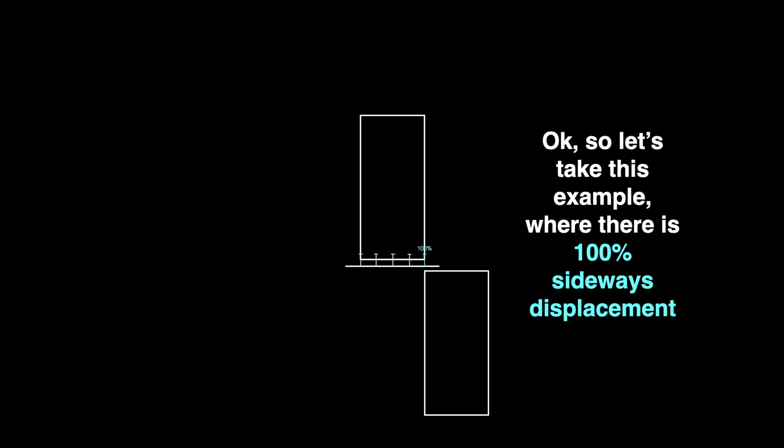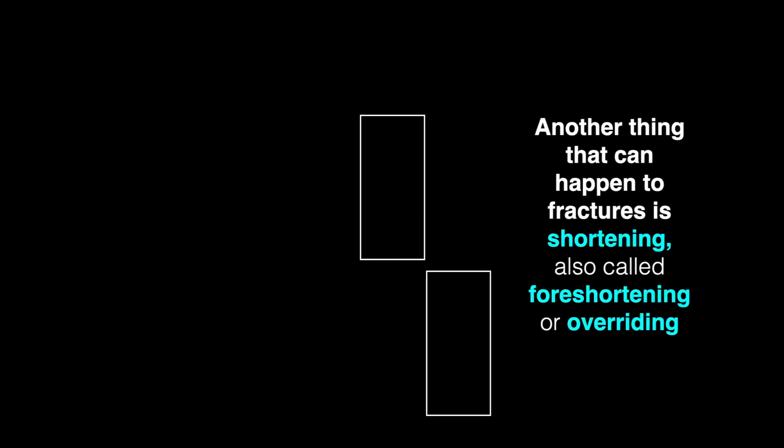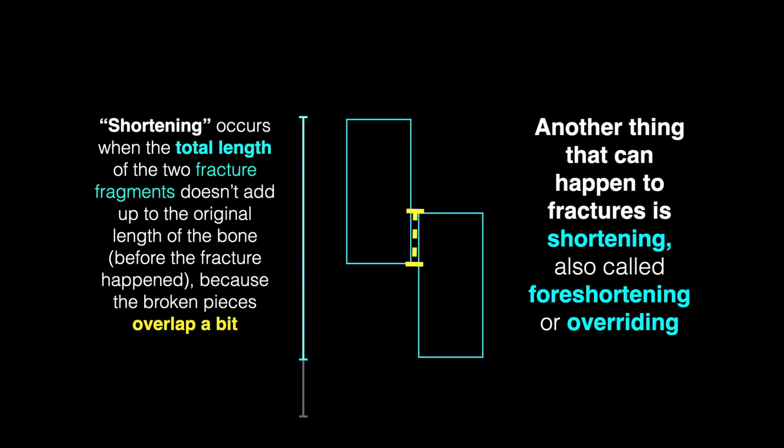So imagine that this is a broken humerus, and there's 100% sideways displacement. This leaves the fracture fragment to move up and down. That process is called shortening. It can also be called foreshortening or overriding. Shortening occurs when the total length of the two fracture fragments doesn't add up to the original length of the bone before the fracture happened, because the broken pieces overlap a little bit.